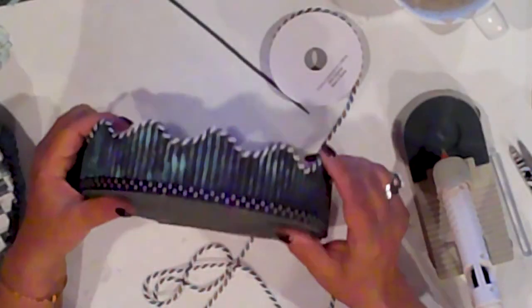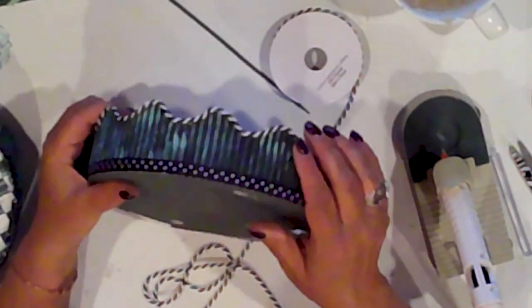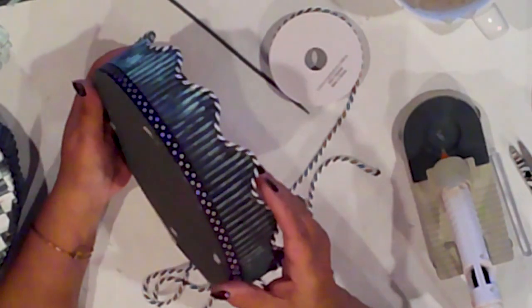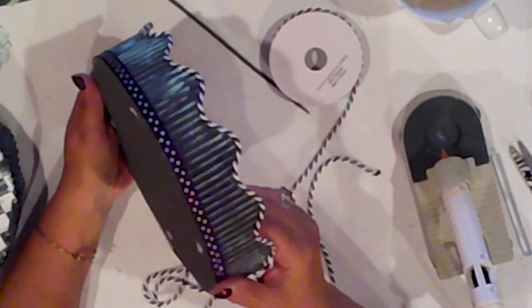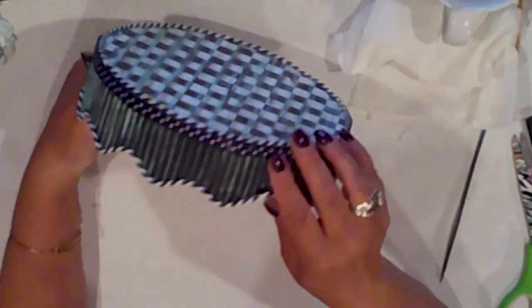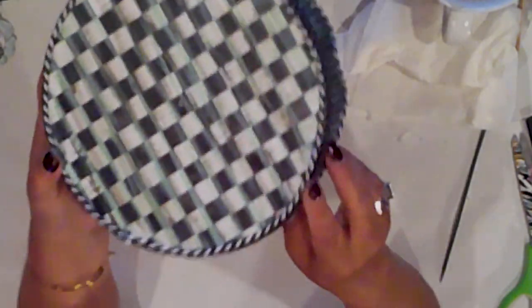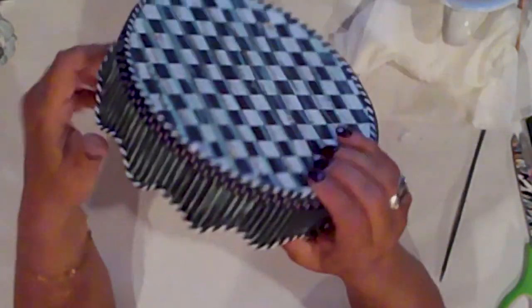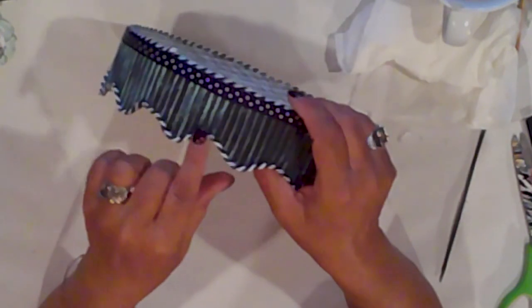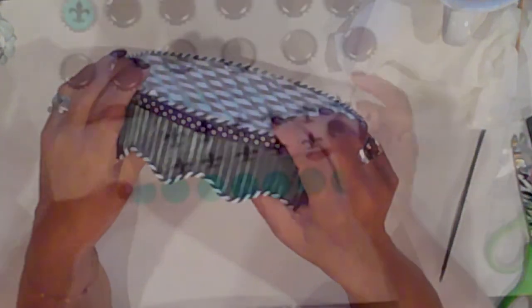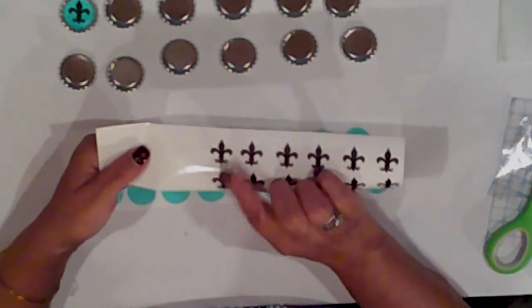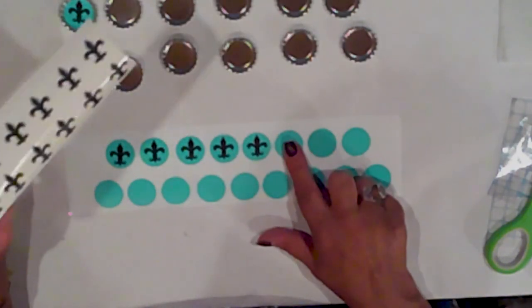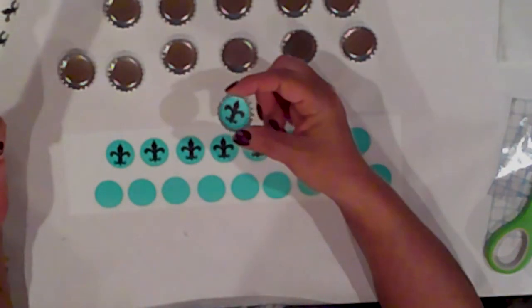I didn't realize my battery had died, so I didn't get me trimming the scalloped edge with the cording. Sorry about that. I just hot glued it following the shape. I also glued the cording here around the edge of the checked disc on the surface. I've cut vinyl circles and fleur-de-lis to fit inside my bottle caps. I'm going to use those to decorate the borders.